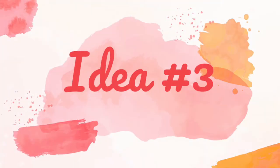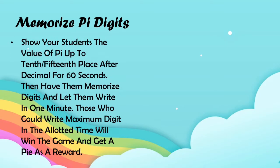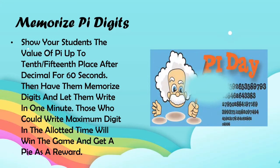Idea 3: Memorize Pi Digits. Show your students the value of Pi up to the 10th or 15th place after the decimal for 60 seconds. Then have them memorize it and let them write it in one minute. Those who can write the maximum digits in the allotted time will win the game and get Pi as a reward.